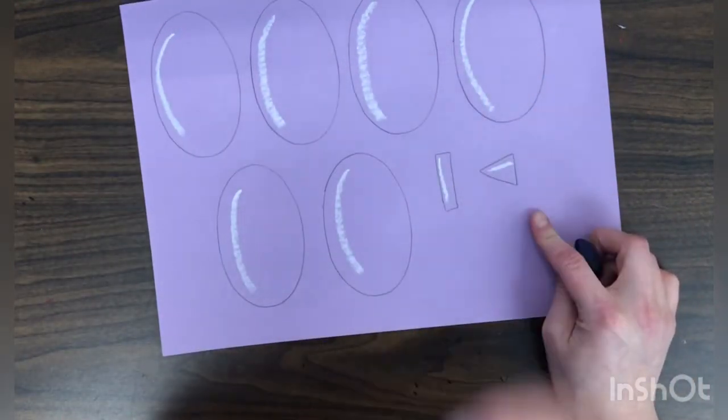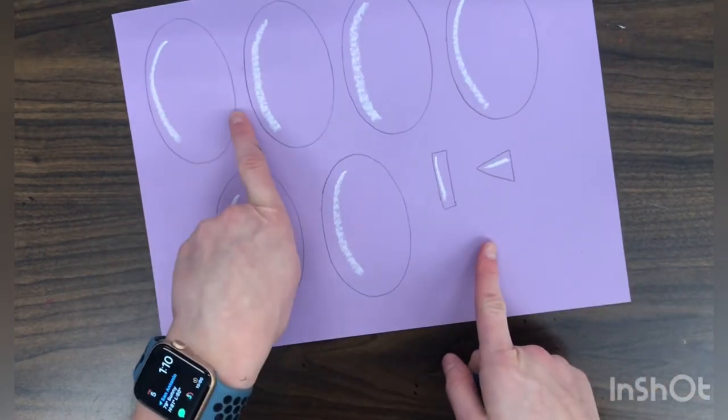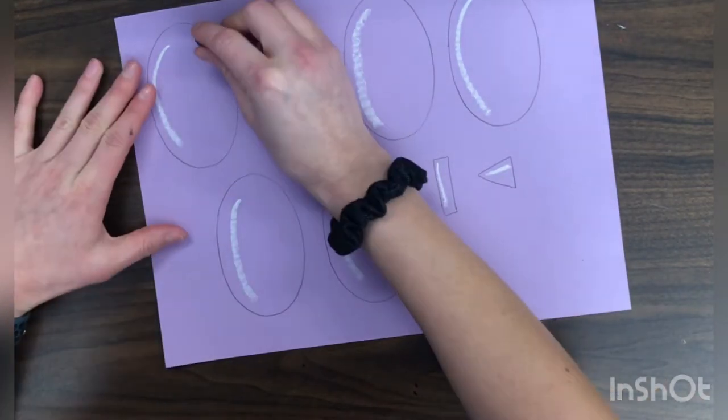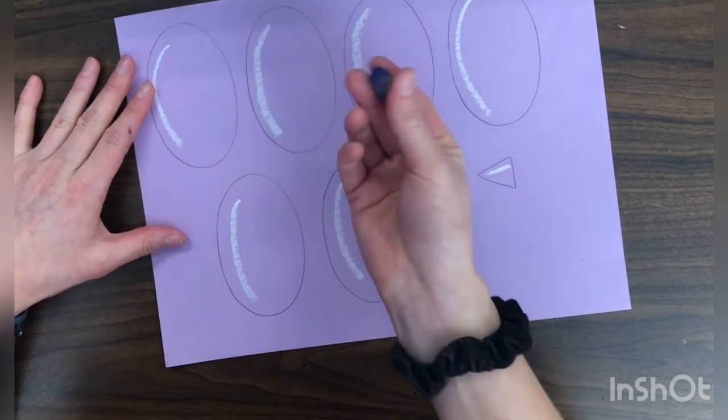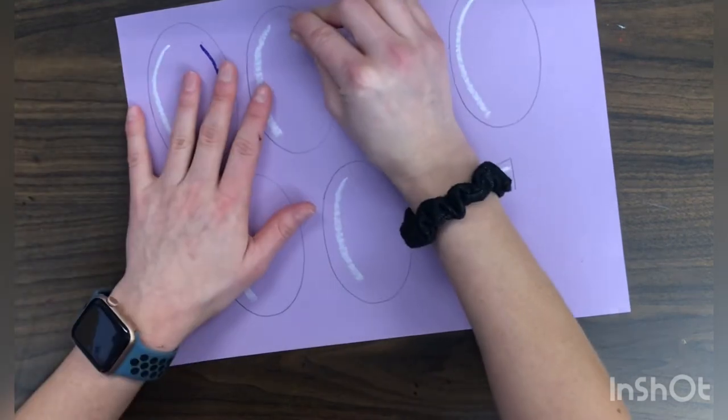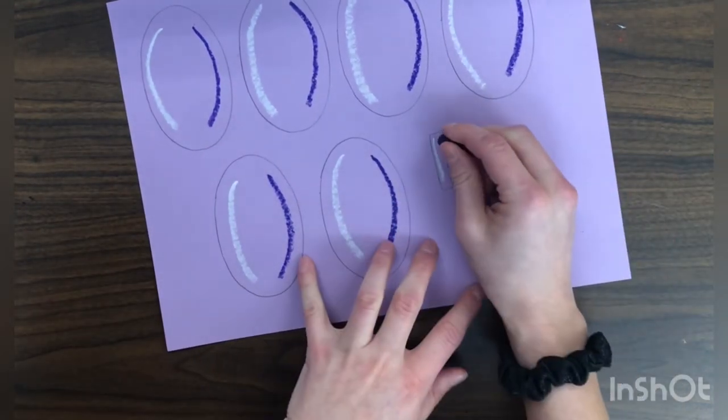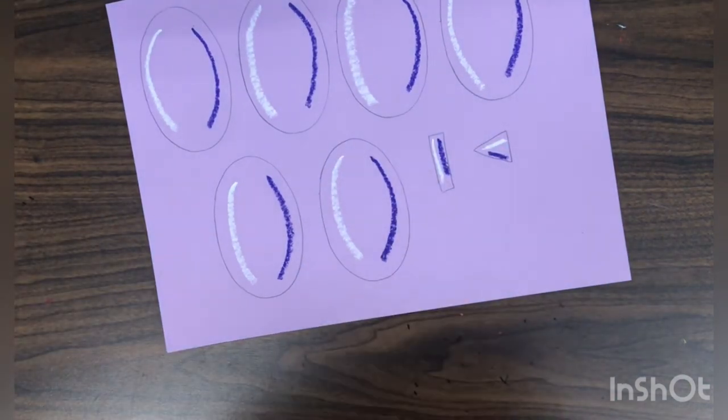So now I have my highlight, but I also need my shadow. So the shadow is going to be on the opposite side, on the right. And I'm going to add a curved line with the darker color of my paper to make the shadow. And same thing, I'll do it on the bottom of my triangle and the right side of my tail.